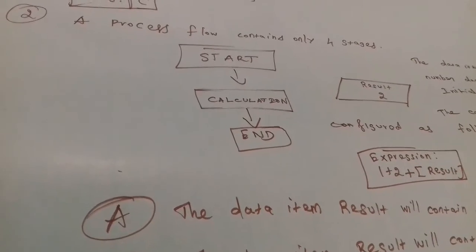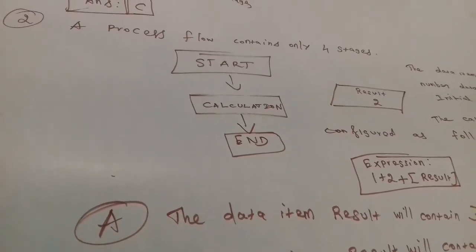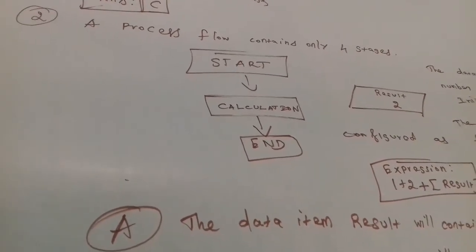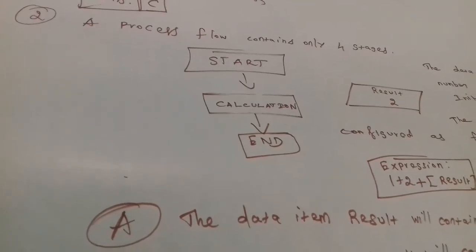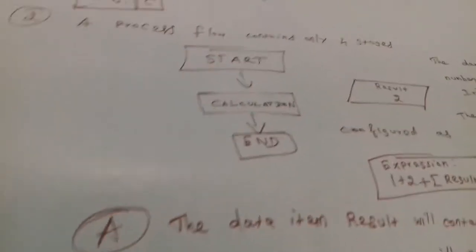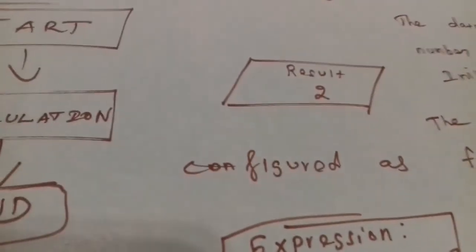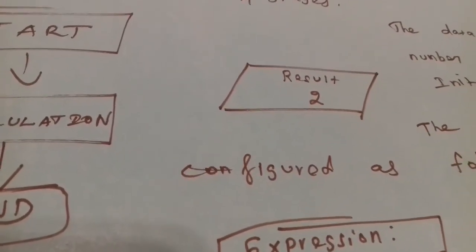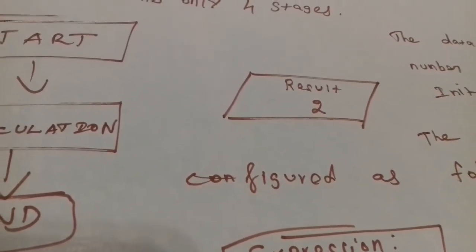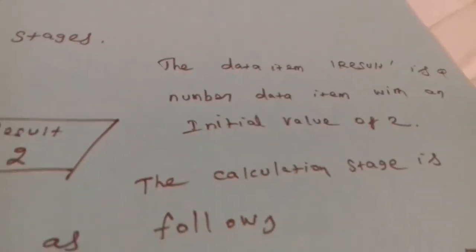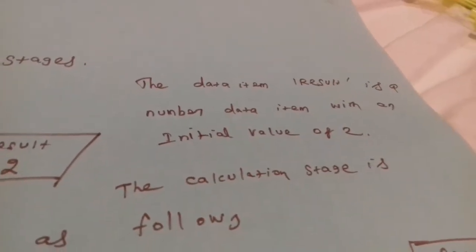Usually in Blue Prism, start and end become default, and there's a calculation stage. The data item here mentioned is 'result' with a value of 2. The data item 'result' is a number data item with an initial value of 2.